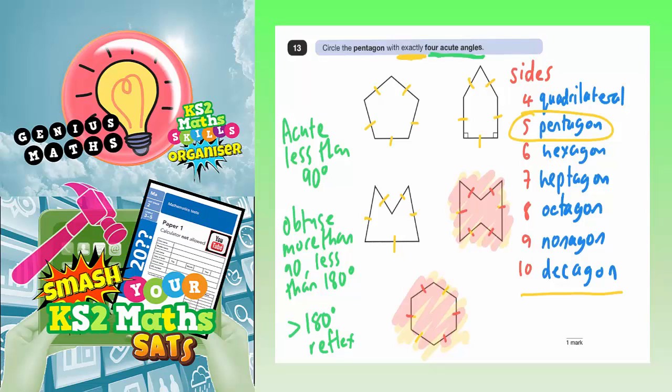Four acute angles, four angles less than 90 degrees. Let's have a look. Well, this angle here, this angle here, this one, this one, and this one, they're all bigger than 90 degrees, you can see that. This shape's got five obtuse angles, so that one is no use to us, so we can also forget about that one.